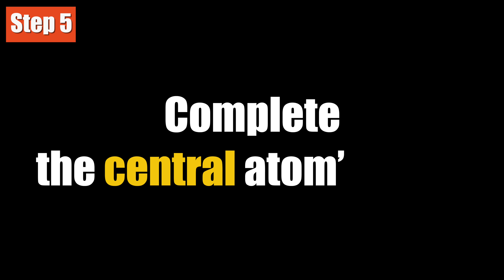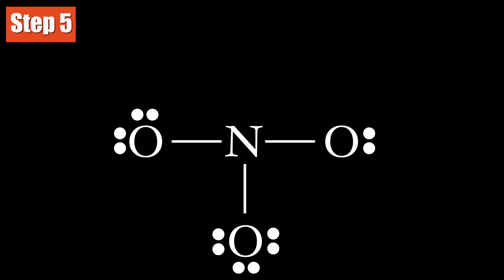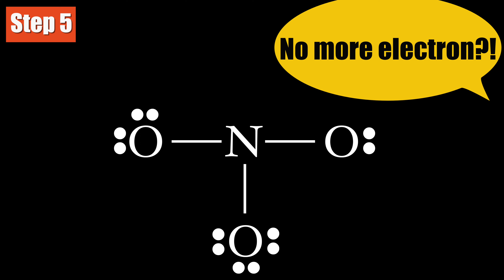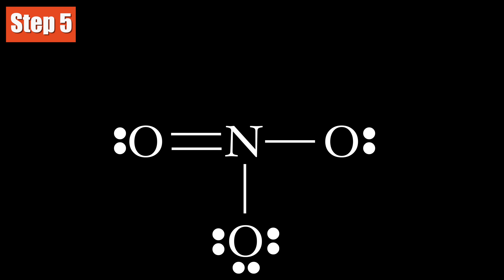Step 5: Complete the octet on the central atom. If you have run out of electrons, use lone pairs on the outer atoms to form multiple bonds.